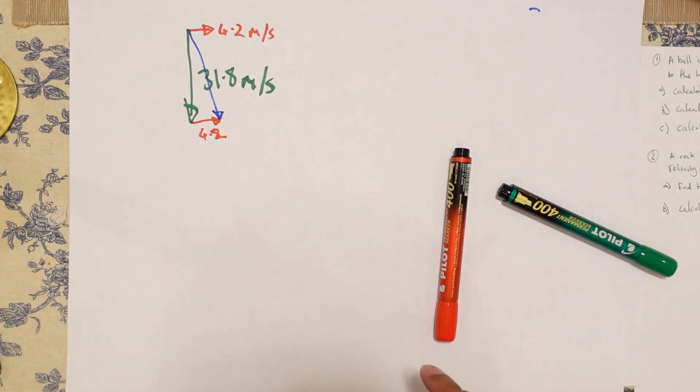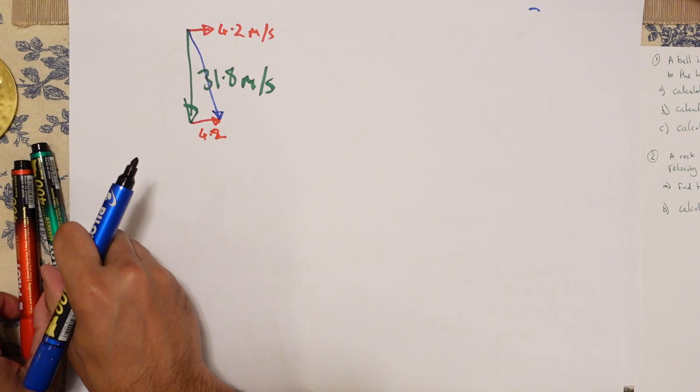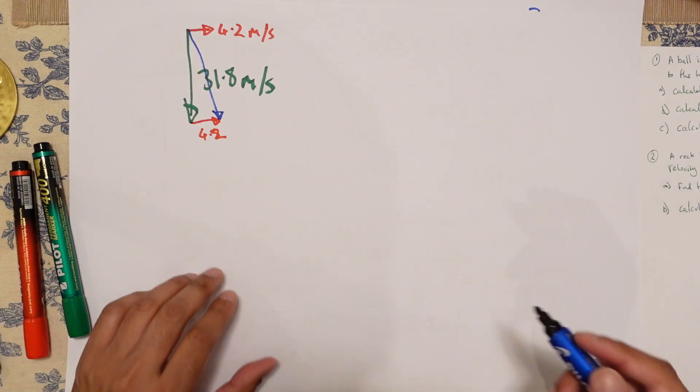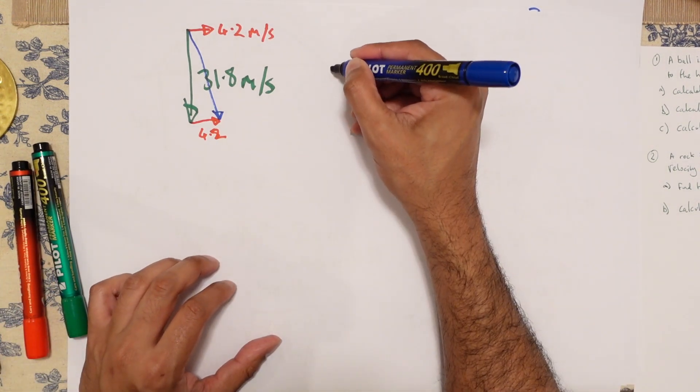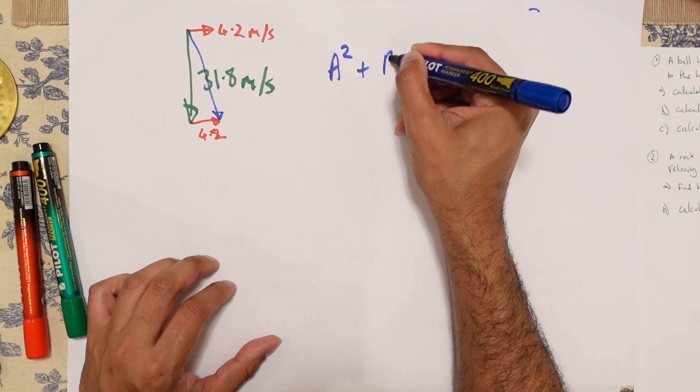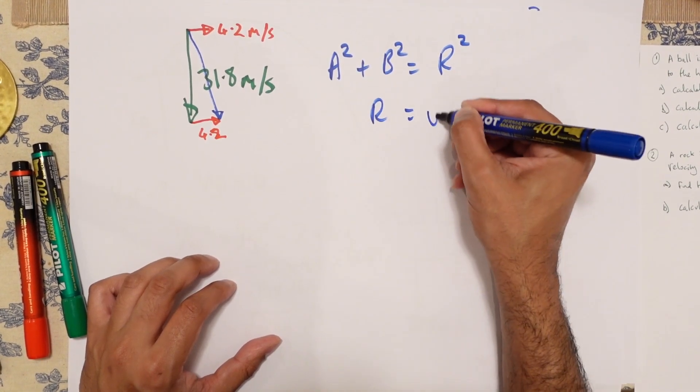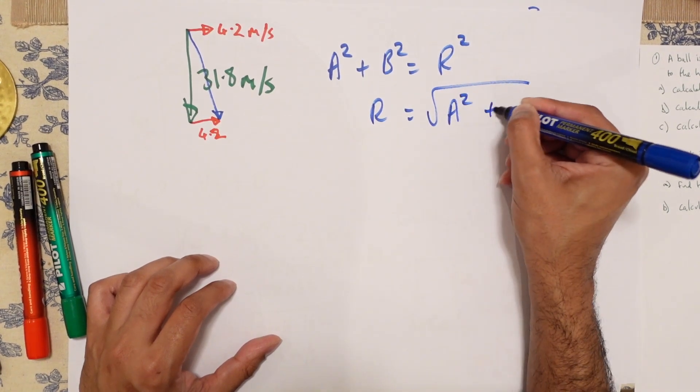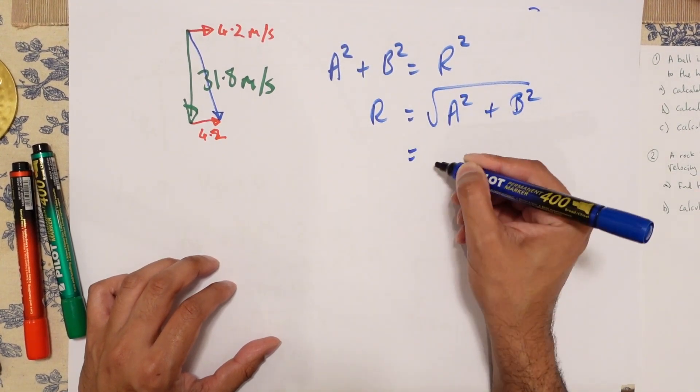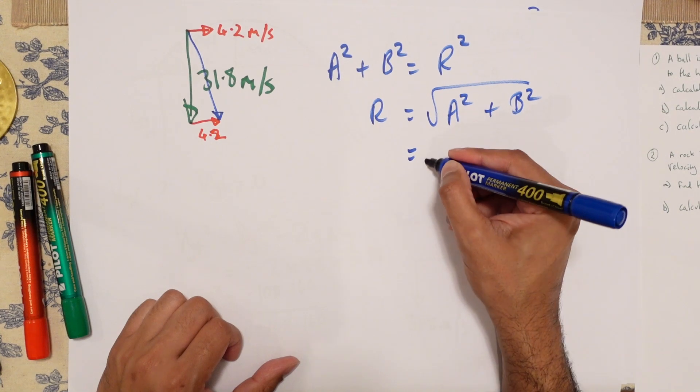I won't use a straight line, but you get the idea. So how do we work this out? Well, a squared plus b squared equals r squared. So r is the square root of a squared plus b squared. Any one of them could be a. It doesn't matter.